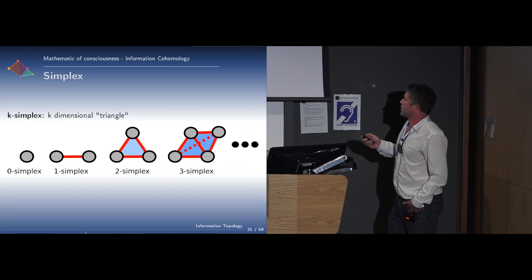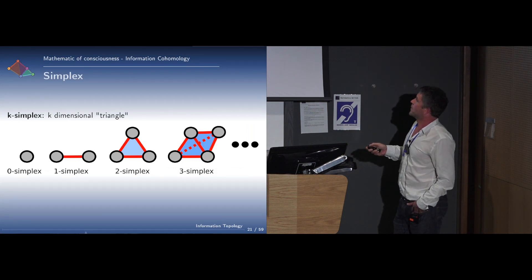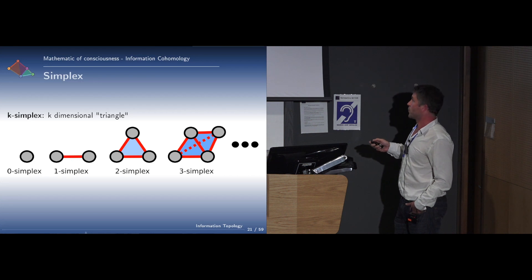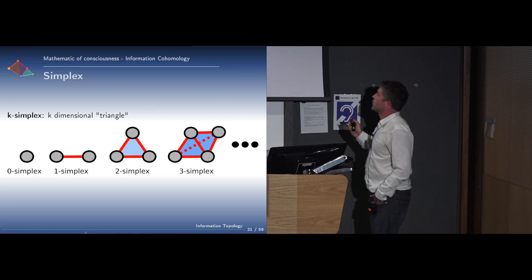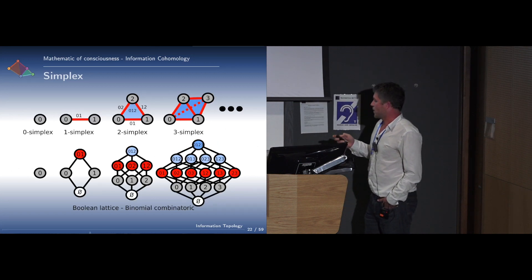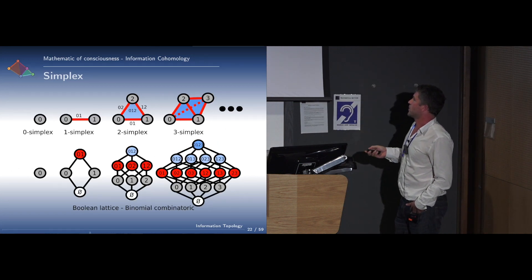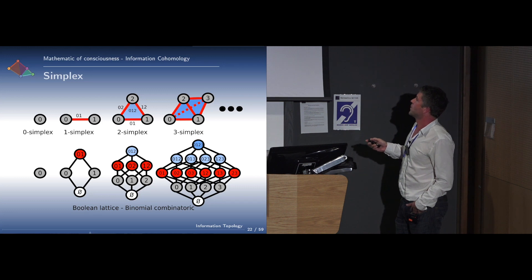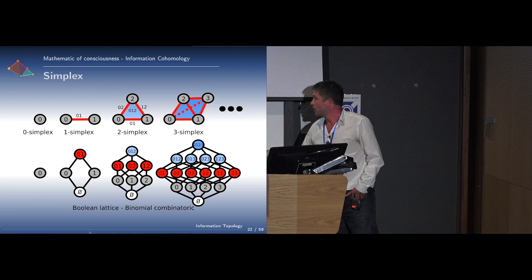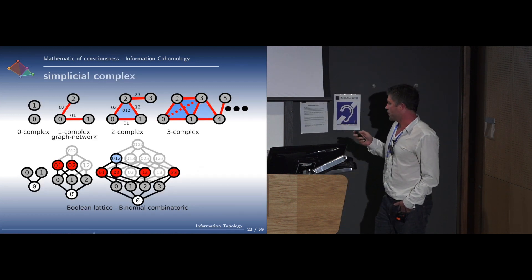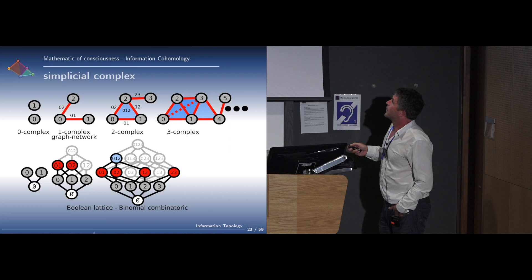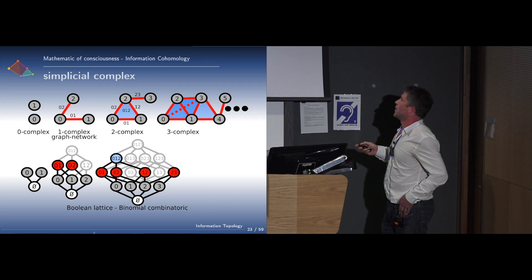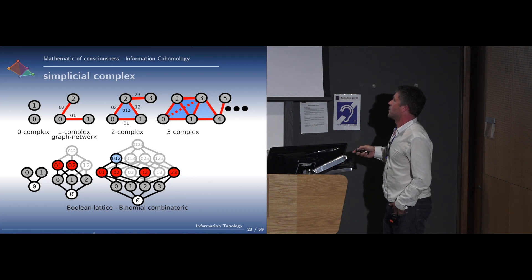To remind you about what is a simplex: a zero simplex is a point, a one simplex is an edge, a two simplex is a triangle, a three simplex is a tetrahedron. You can always see it combinatorially. This is simplicial combinatorics. You can always associate it with a kind of subset lattice, which has the binomial combinatorics. You can see a simplex complex as an algebraic sum of simplices of faces, which can also be represented within such a lattice.